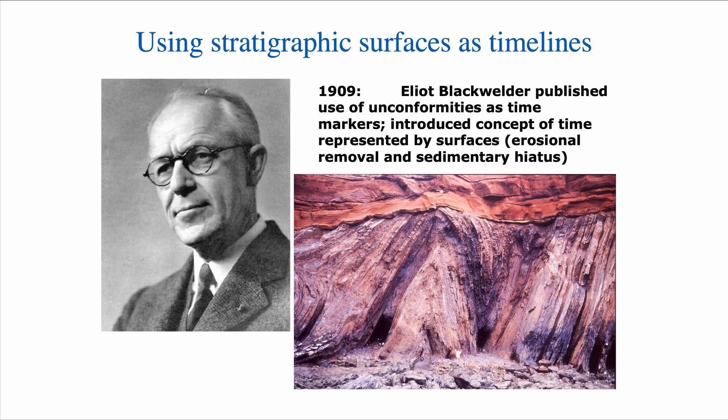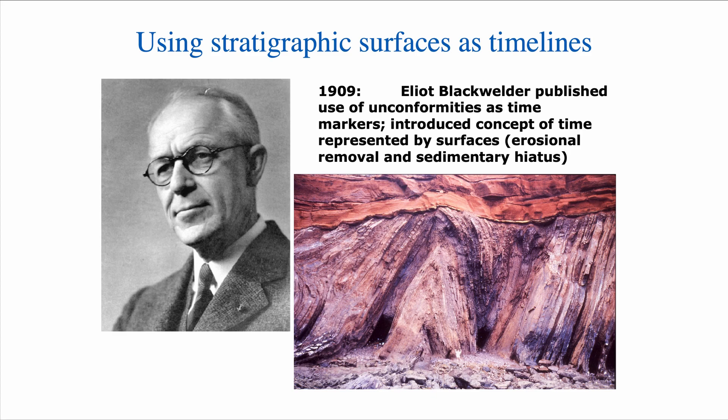So if Walter's Law is the first step in trying to understand sequence stratigraphy, the second step, a very important step, is the notion that a surface, an erosional surface, can be a time surface. Because that's one of the tenants of sequence stratigraphy. And the first researcher to actually use stratigraphic surfaces as timeline is Elliot Blackwelder in 1909, where he published the use of unconformities as time markers.